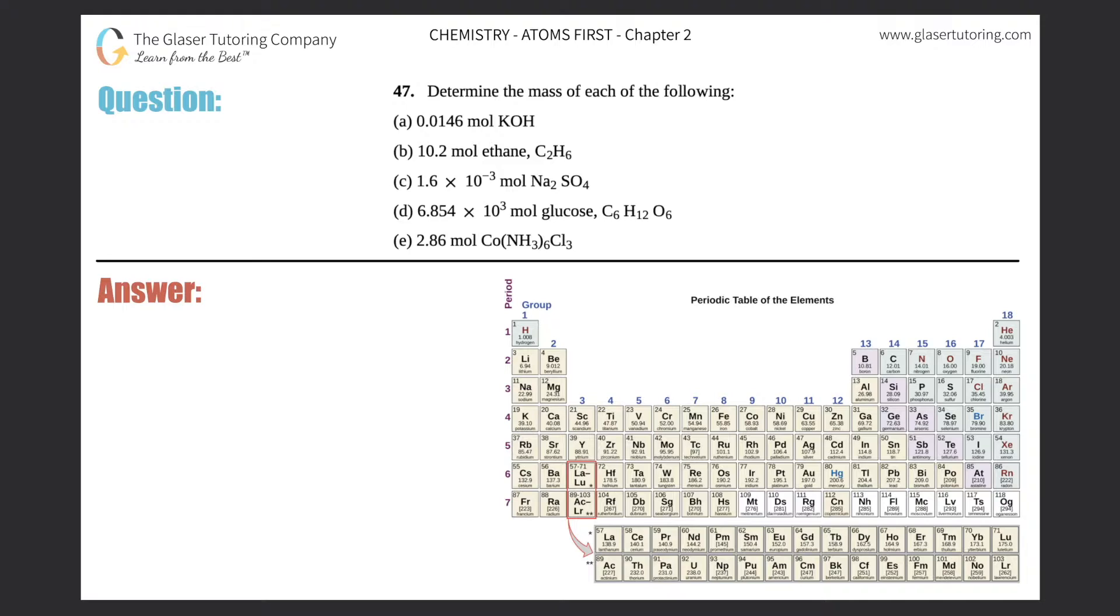Number 47: Determine the mass of each of the following. For each one we have moles, so it looks like for this type of question we're going from moles of something to a mass, and mass is usually inferred as grams.